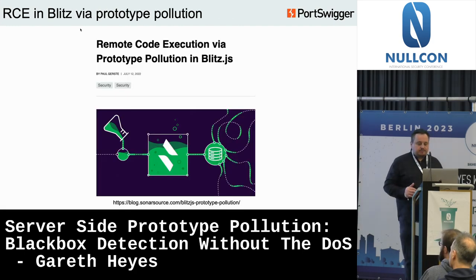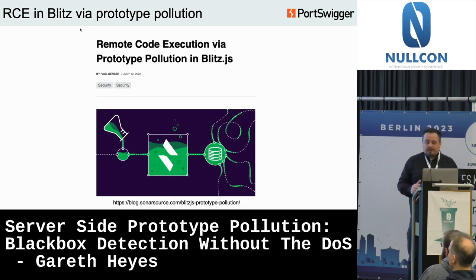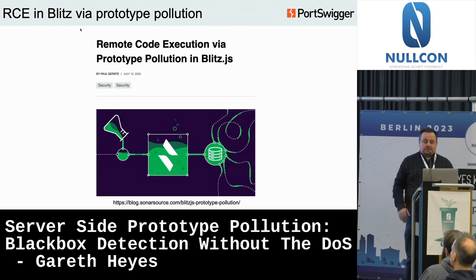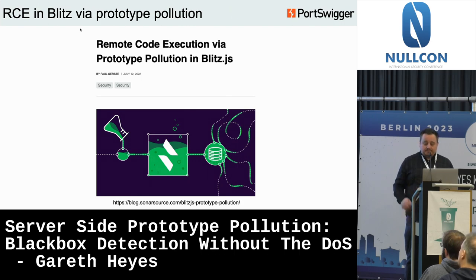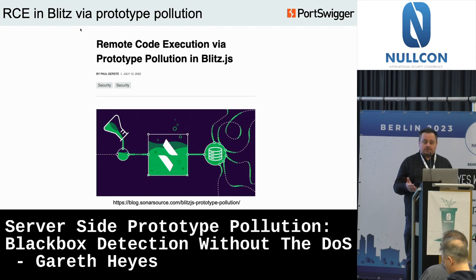Paul Gerst blogged about a prototype pollution vulnerability in the SuperJSON library that resulted in RCE in Blitz — a fantastic blog post, really recommended. SuperJSON is unusual: it allows you to specify properties in the JSON and reference, read, and assign them to other properties in the JSON. For example, 'brands.0' means get the first brands object, and the array value says move that brands object into the path defined in the array.